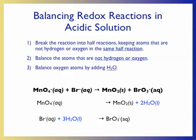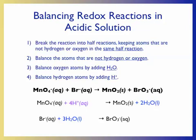Now that we've balanced the oxygen atoms, we need to balance the hydrogen atoms introduced by adding water molecules. We do this by adding H+ ions to the side that contains fewer hydrogen atoms. For the first half-reaction, we introduced four hydrogen atoms via two water molecules, so we add four H+ ions to the left-hand side. For the second half-reaction, we add six H+ ions, since three water molecules introduced six hydrogen atoms to the left-hand side.